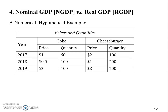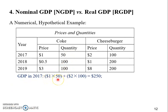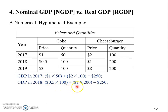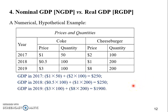Let's see what numbers we got. Starting with 2017: the price of Coke times the quantity gives us $50 of Cokes, and $200 of cheeseburgers, so when we add them up it's $250 — that's this hypothetical economy's GDP in 2017. In 2018, similarly, we end up with the same number: $250. In 2019, we find the GDP of this economy increases all the way up to $1,900.